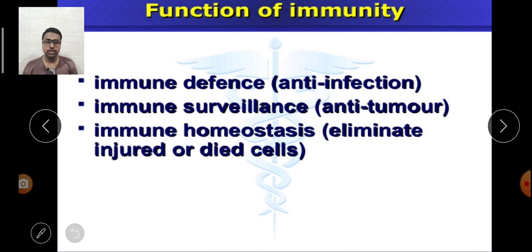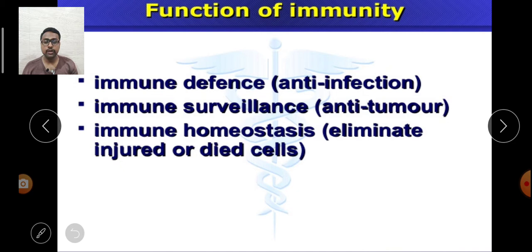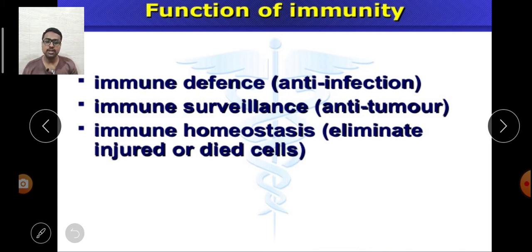The second function is immune surveillance, also referred to as anti-tumor. When a cell undergoes uncontrolled growth and multiple stages of replication without any regulation, it leads to the accumulation of a cluster of uncontrolled cells, which can potentially be converted into a tumor or cancerous growth. These must be regulated, picked up, and killed by other components of the immune system. This surveillance system is arranged to remove cells that undergo uncontrolled growth.